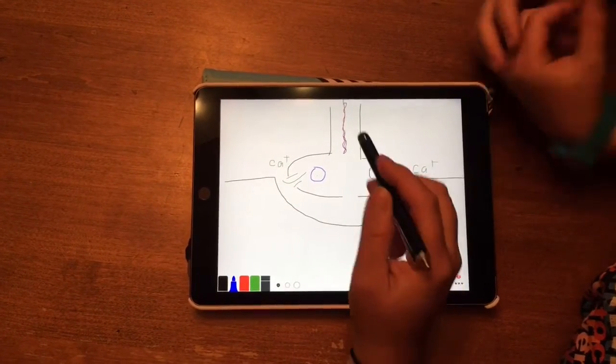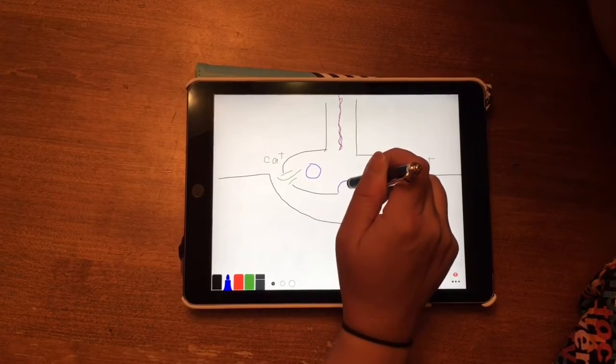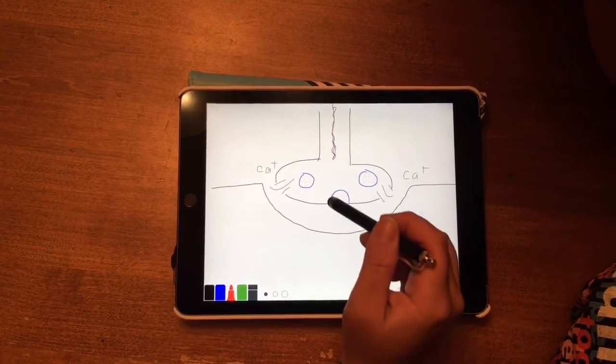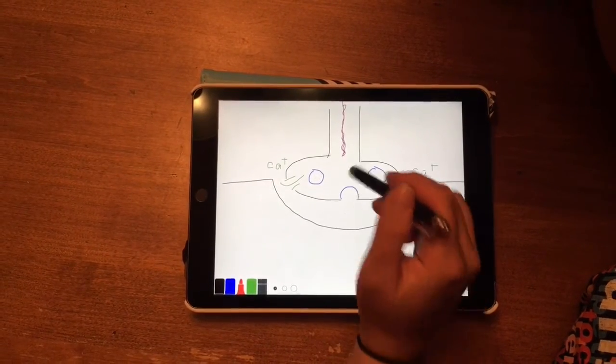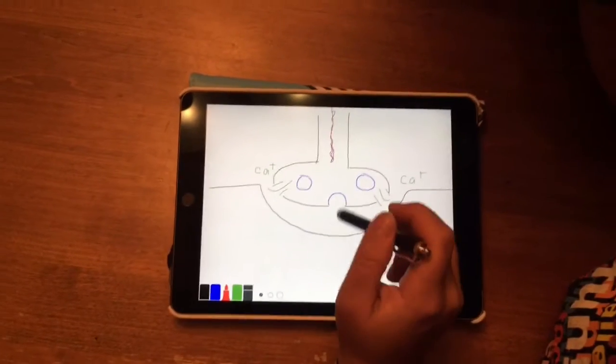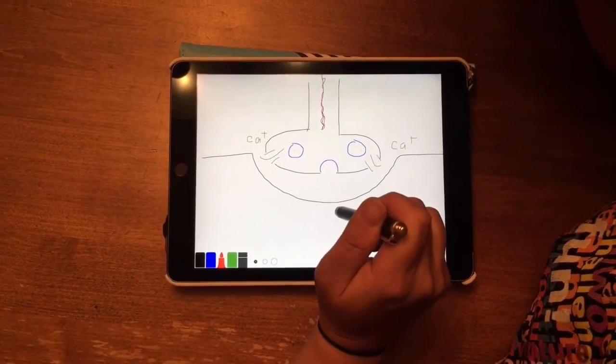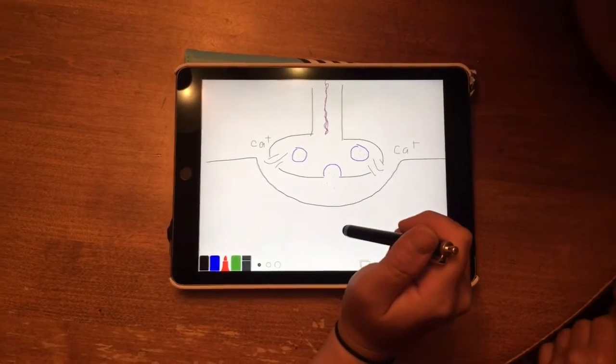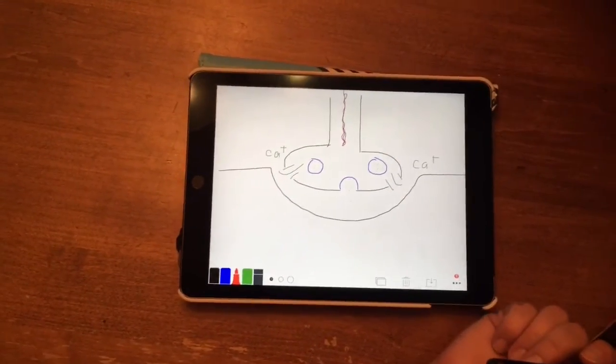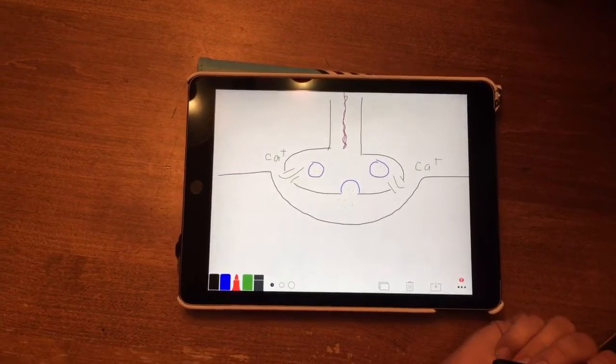They move towards that synaptic cleft and then they fuse with the membrane, that black line. Then the acetylcholine is released into the synaptic cleft via exocytosis. Exocytosis is like opening their mouth and spitting it out.